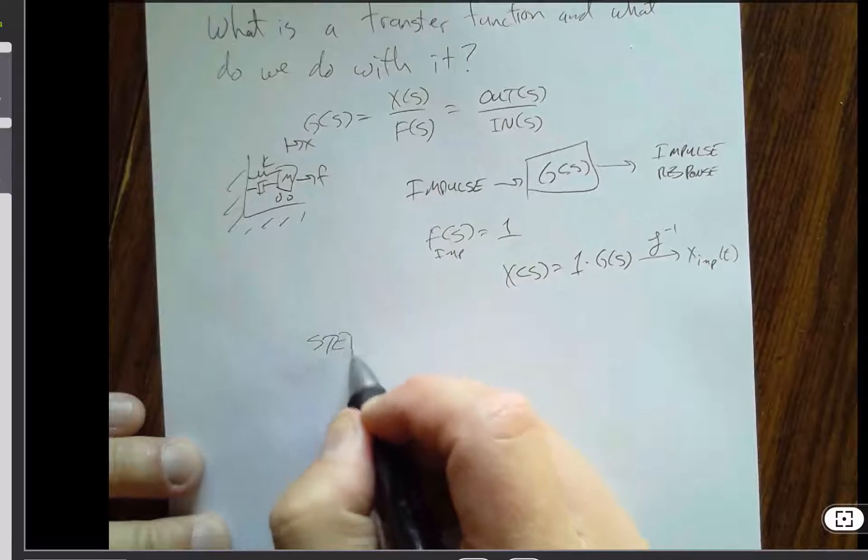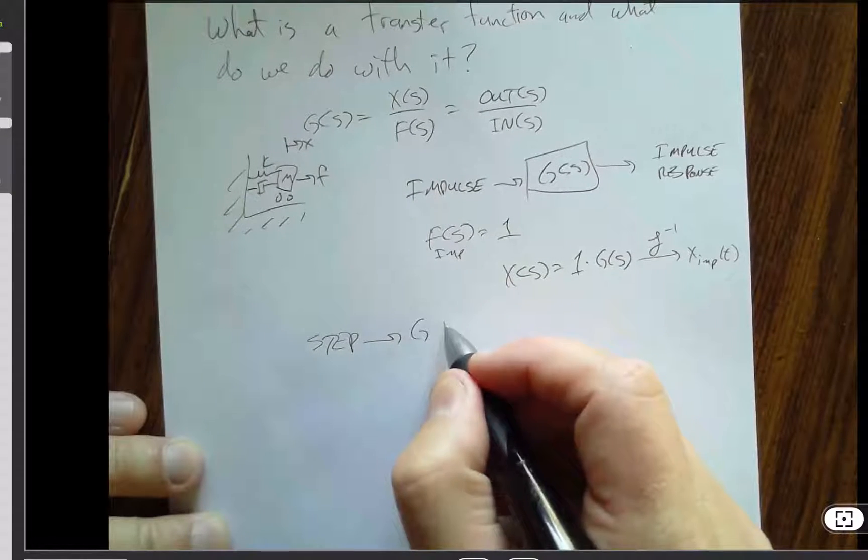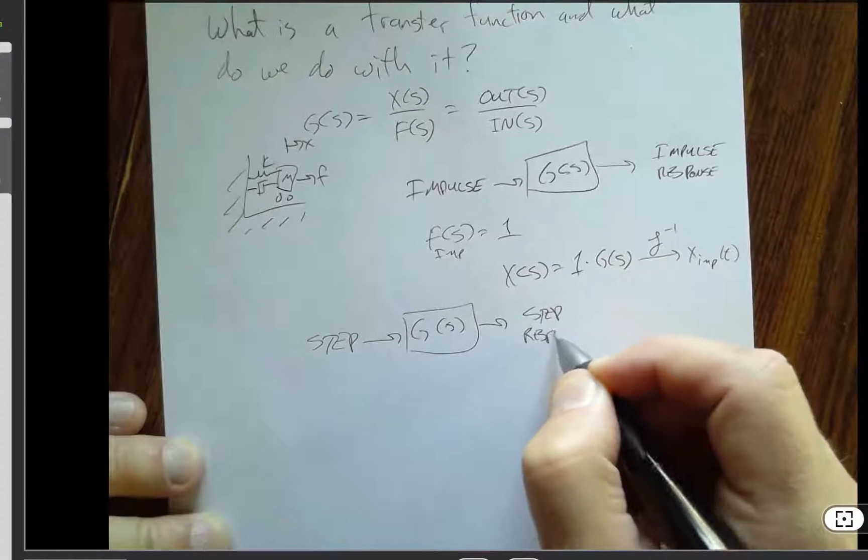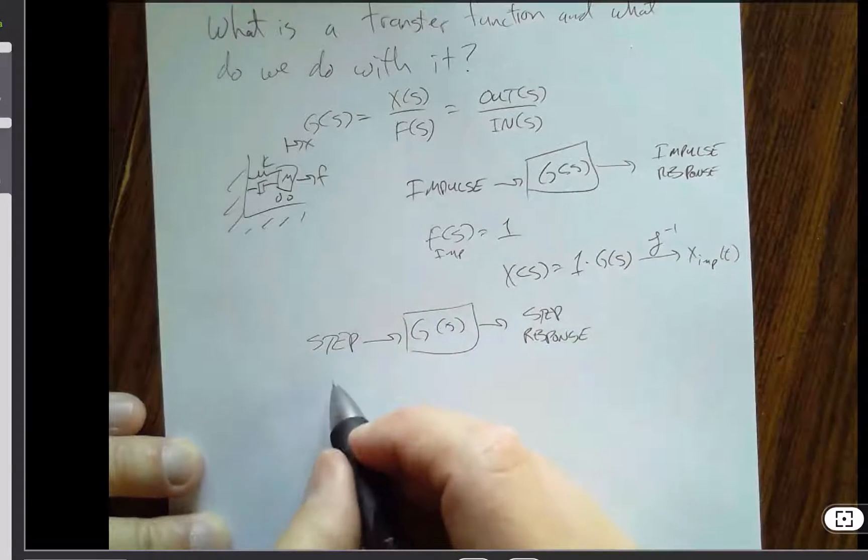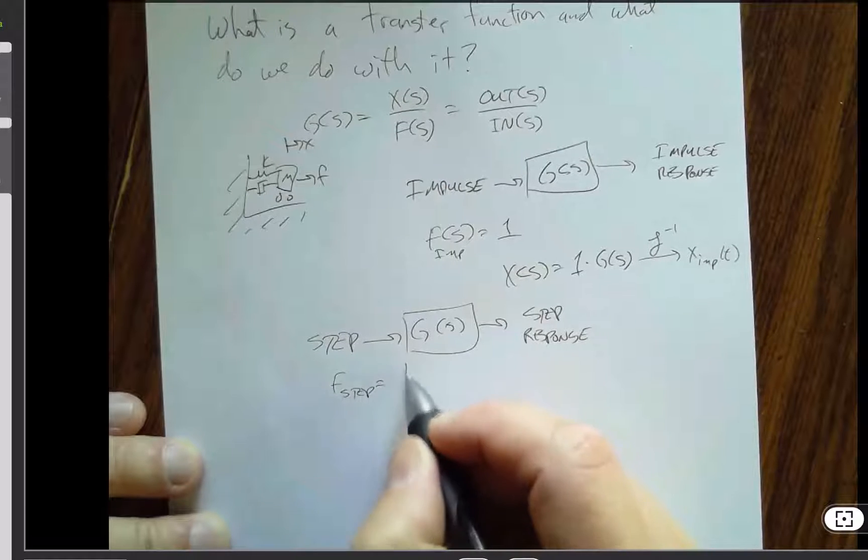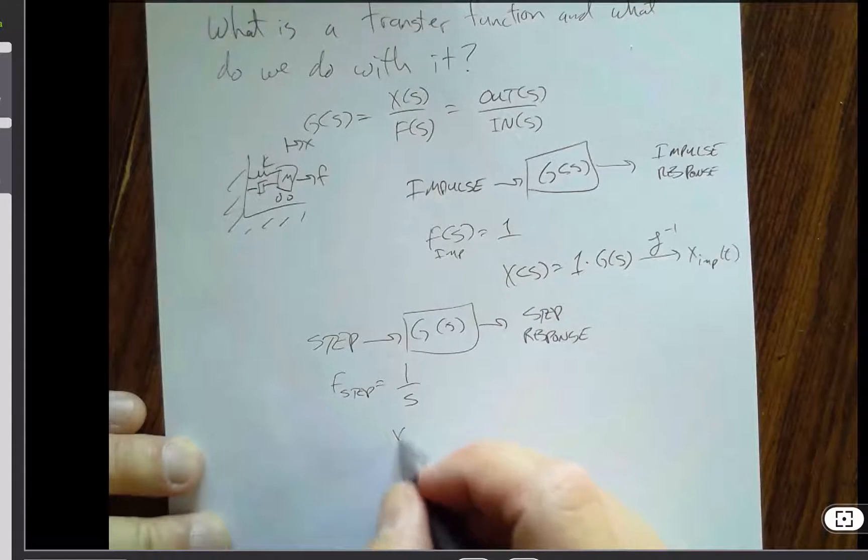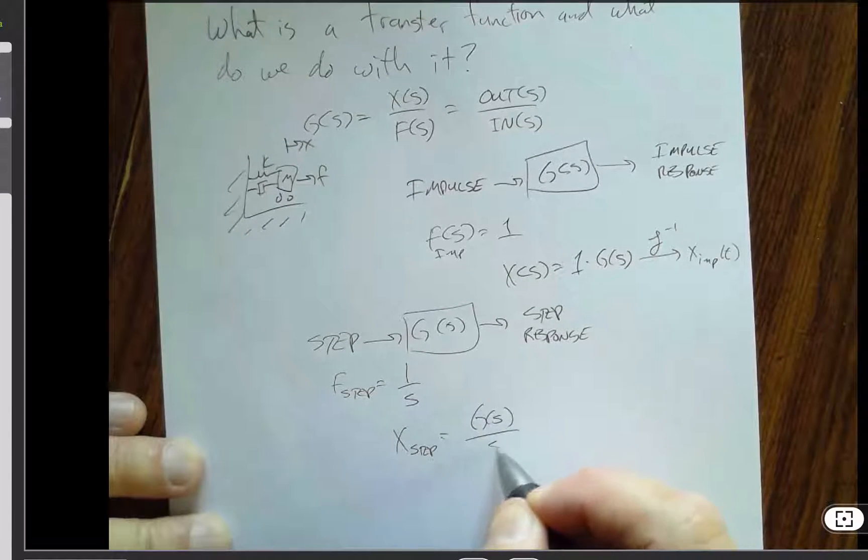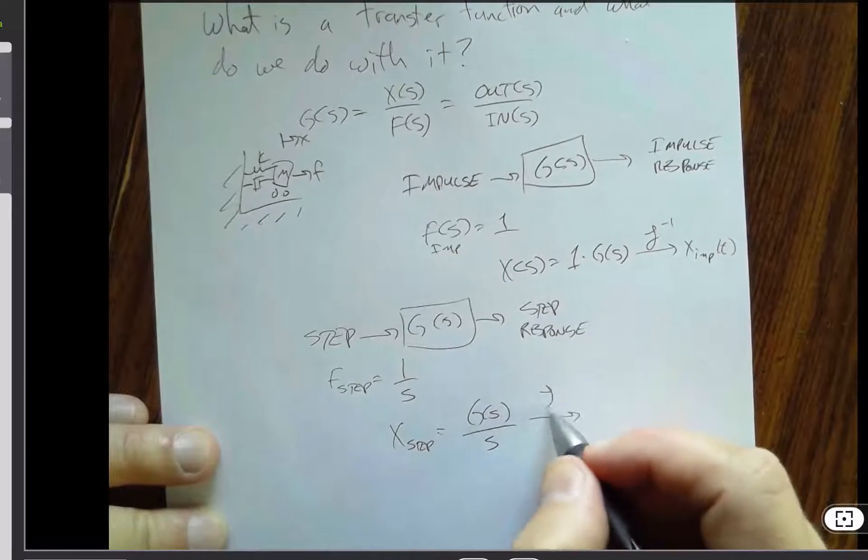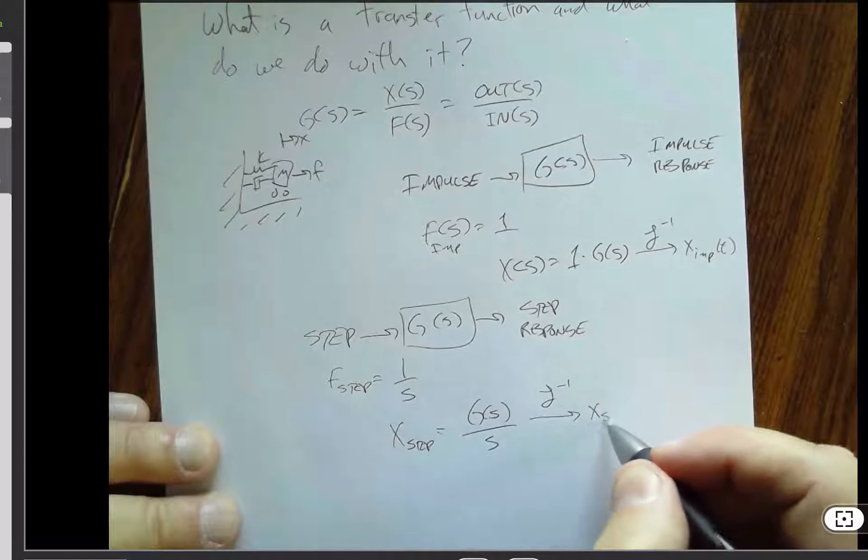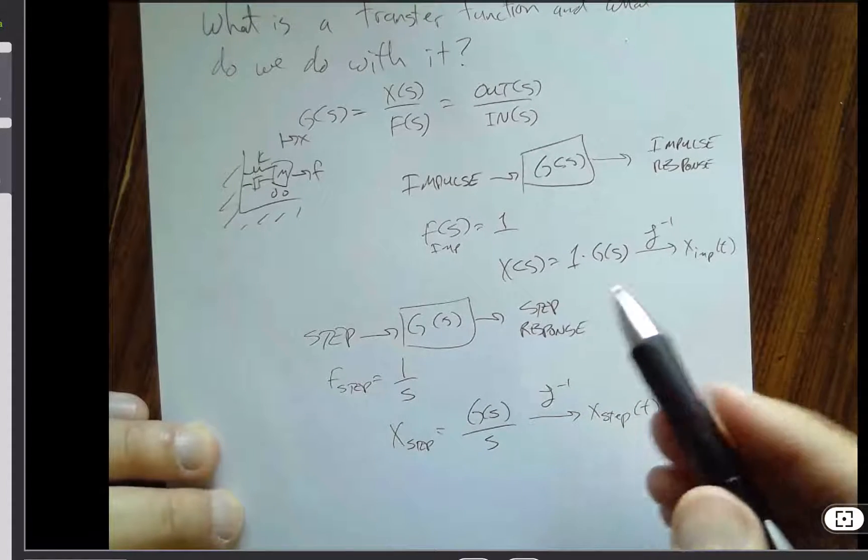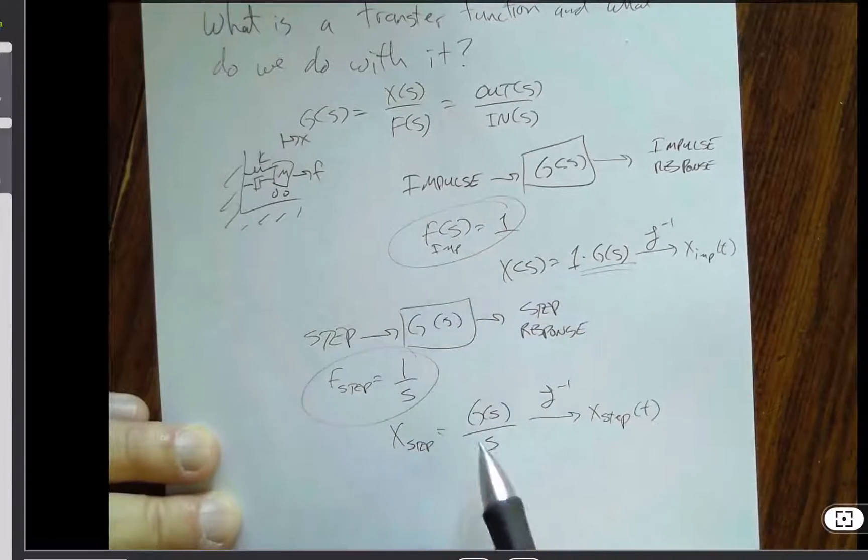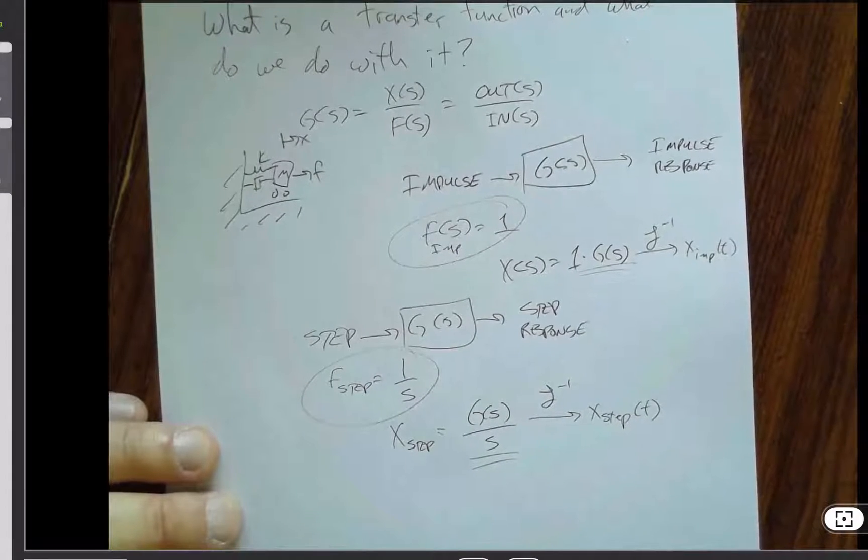Similarly, if I took a step input into the system, the output would be the step response. And so f step would just be 1 over s, and so x of s step would equal g of s over s. And again, I could take the inverse Laplace and do partial fraction expansion and get x step of t. But notice, from here to here, f changed, my input changed, but my transfer function is a constant for a linear time invariant system.